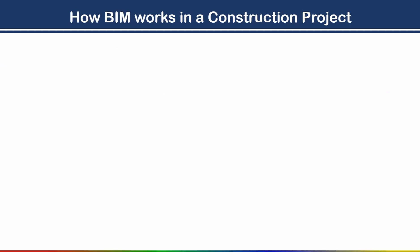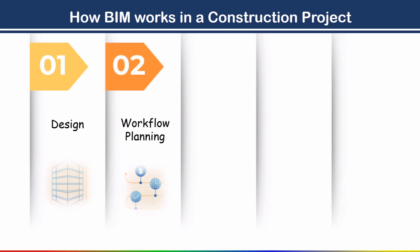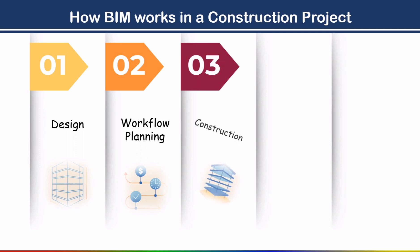Now the next topic is how BIM works in a construction project. Building information modeling is used for the entire lifespan of a project, from planning and design through construction. At each stage along the way, BIM adds value for everyone involved in the project. So building information modeling is useful at every stage. The first stage is the design stage. In this stage, everyone collaborates to make cost and timeline estimates while refining processes.